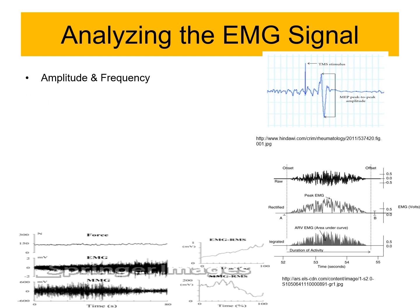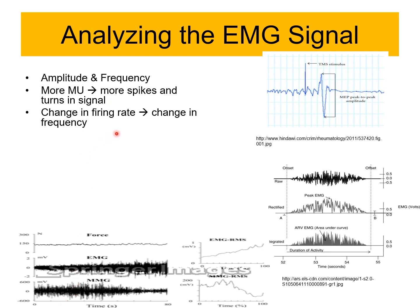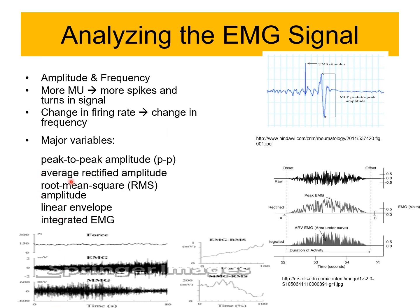We can also measure more motor units producing more spikes and turns in the signal. Other variables include: peak-to-peak amplitude (max to minimum), average rectified amplitude (cutting negative values and finding the average amplitude), root mean square value of the amplitude, linear envelope (the shape), and integrated EMG which gives the area under the curve — an indication of energy. The M-Wig is calculated from the negative peak to the positive peak and has clinical relevance for the health of the fiber or muscle.